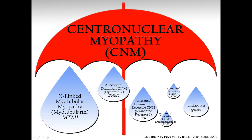Genetically, however, these subtypes are different — they have different patterns of inheritance, different proteins involved, and different genes involved. There are both similarities and important differences. It is very important for affected families to find out which specific type of centronuclear myopathy they have, and this can currently only be determined by genetic testing.